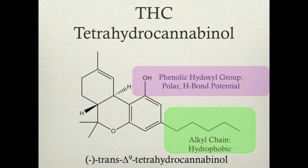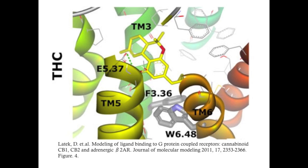Now let's explore how THC interacts with the CB1 receptor specifically. The phenolic hydroxyl group of THC forms a hydrogen bond with a glutamate residue on transmembrane helix V, marked as residue 537. Its alkyl tail is associated with the hydrophobic area between helices 3, 6, and 7. This association is driven by the entropic favorability via the hydrophobic effect.